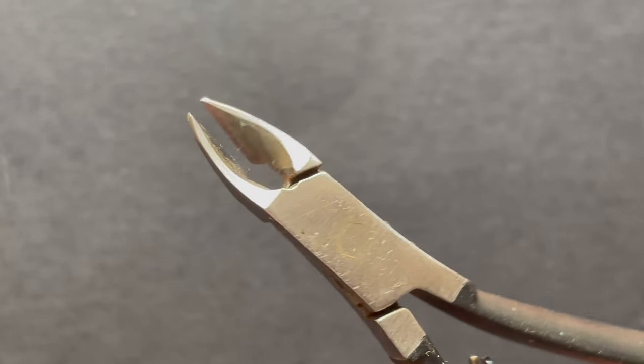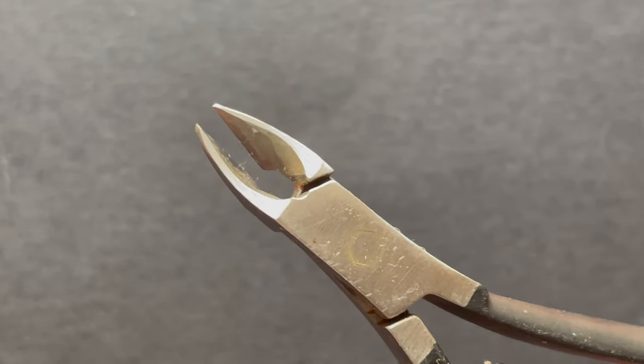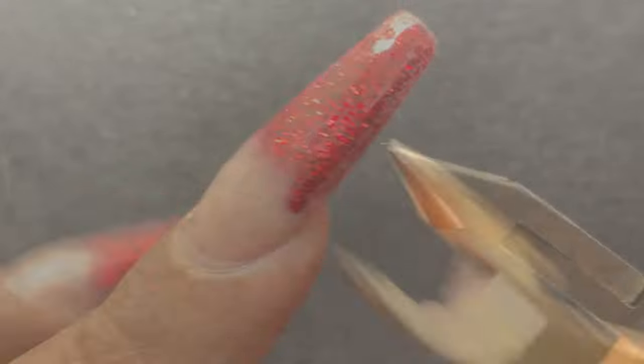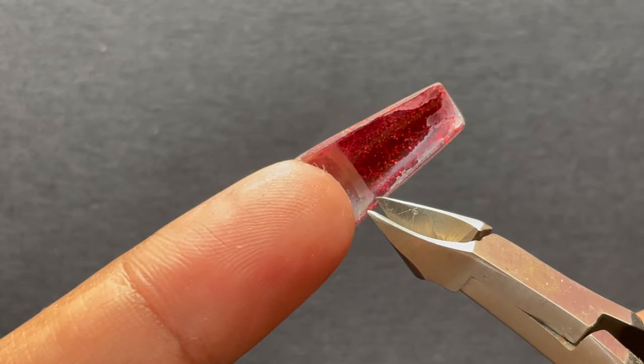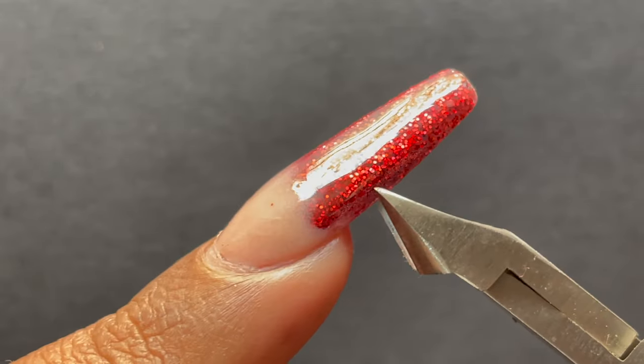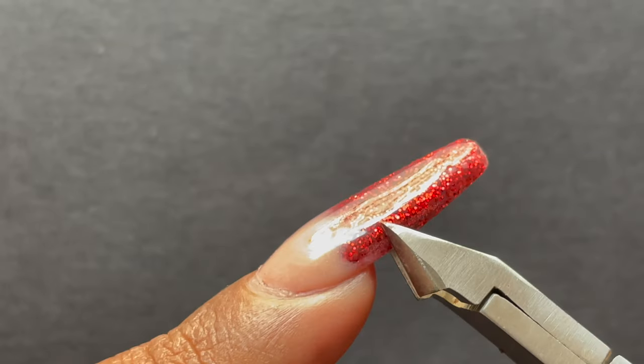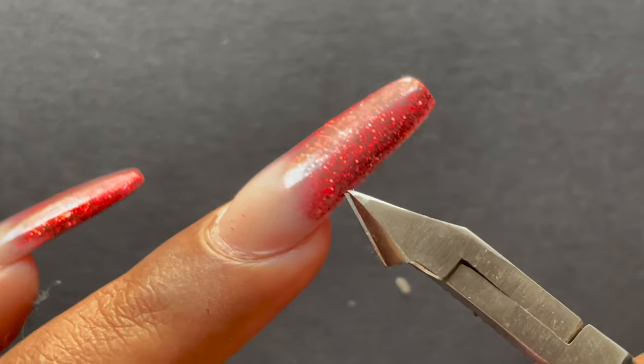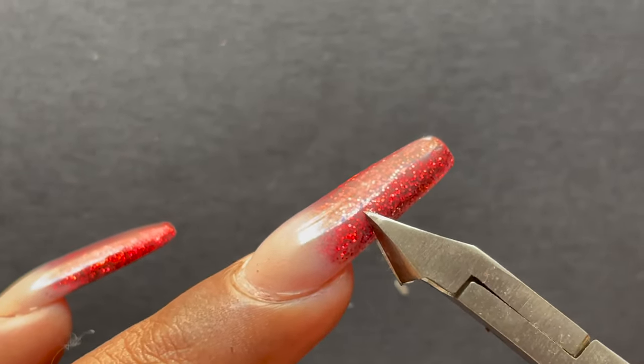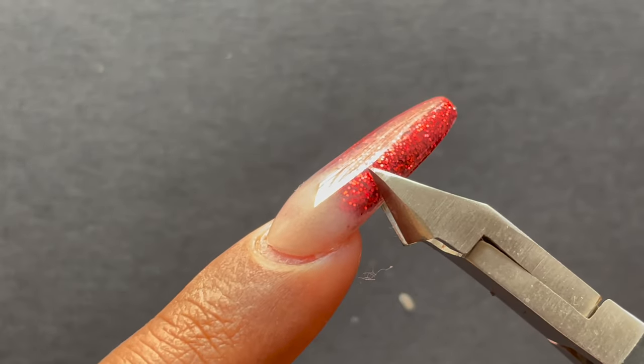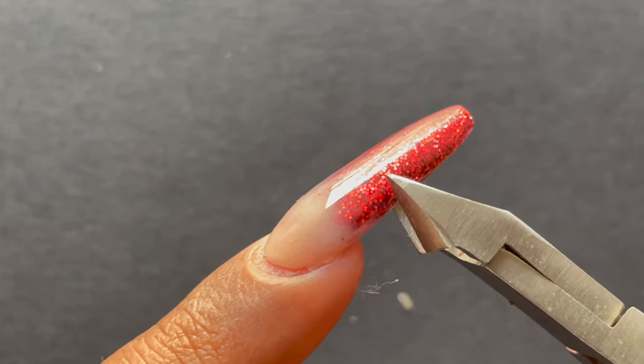When you clip off the extra length, always remember to look at the back side of the nail where you can see the natural nails. Always clip off a little above from your natural nails and then you can start with the next process. This is one of the most satisfying moments for me, so I really enjoy when I cut down the length of my nails.